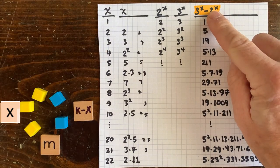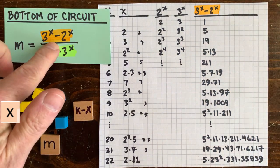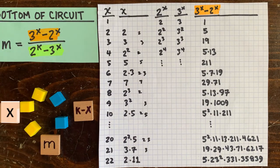Unfortunately, 3 to the x minus 2 to the x looks pretty random again. But it seems to have a similar pattern to before.